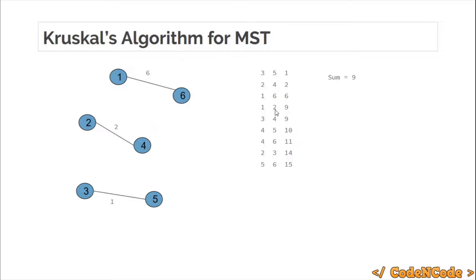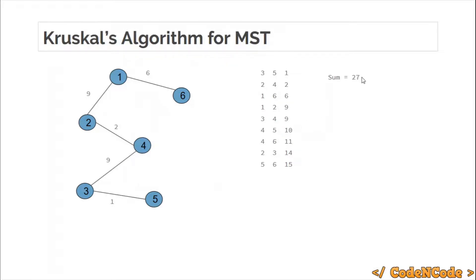Next we consider nodes 1 and 2. Since node 1 and node 2 are not connected — meaning there is no path from node 1 to node 2 — we add that edge and increment the sum by 9. Then nodes 3 and 4 are also not connected, so we add the edge between 3 and 4 and increment the sum by 9.